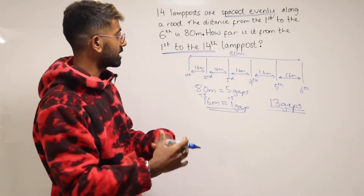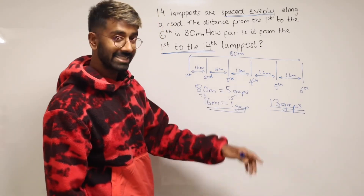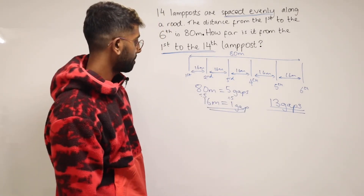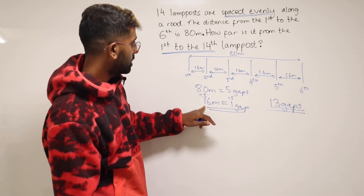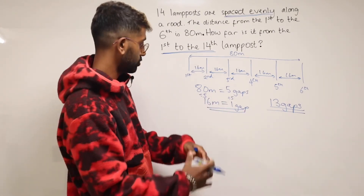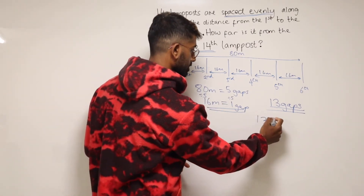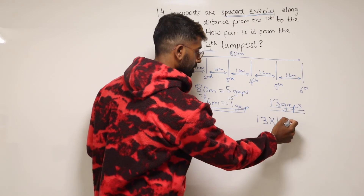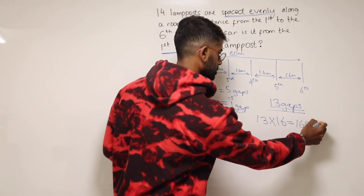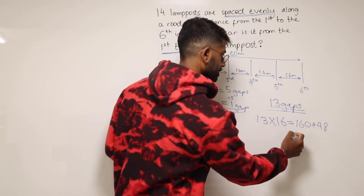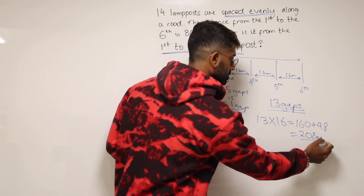If you want to see that, you can draw out 14 lampposts and count the gaps between them — you'll see there are 13 gaps in total. We learnt that 1 gap is 16 metres and in total there are 13 gaps. So to work out the total distance, we do 13 times 16, which is 160 plus 48 — that's 208 metres in total.